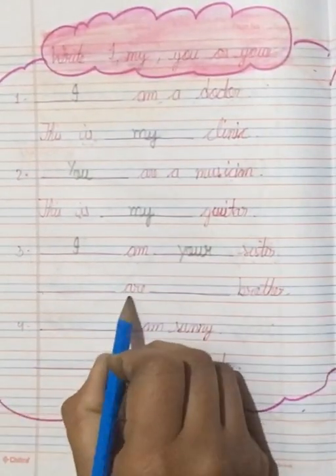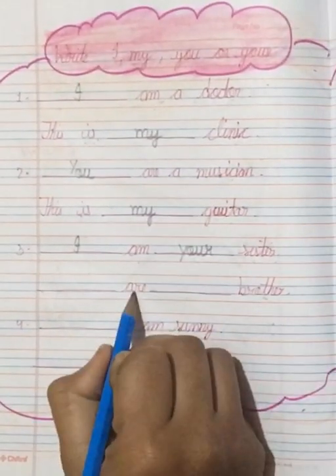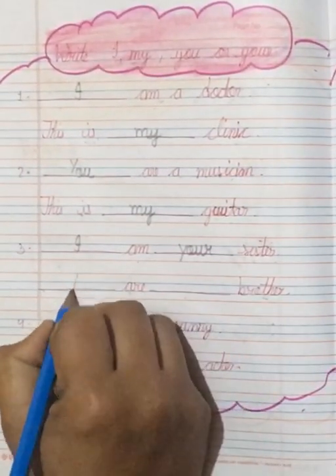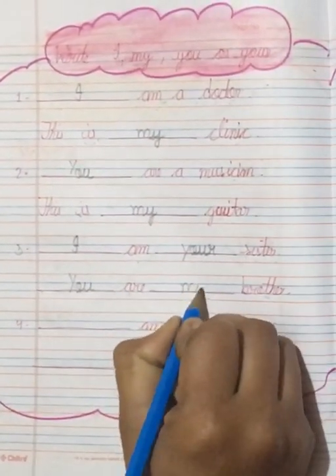Now dash is are dash brother. Dash are dash brother. Toh kya are raha hai? R. Toh kya use karenghe? You. You are my brother.